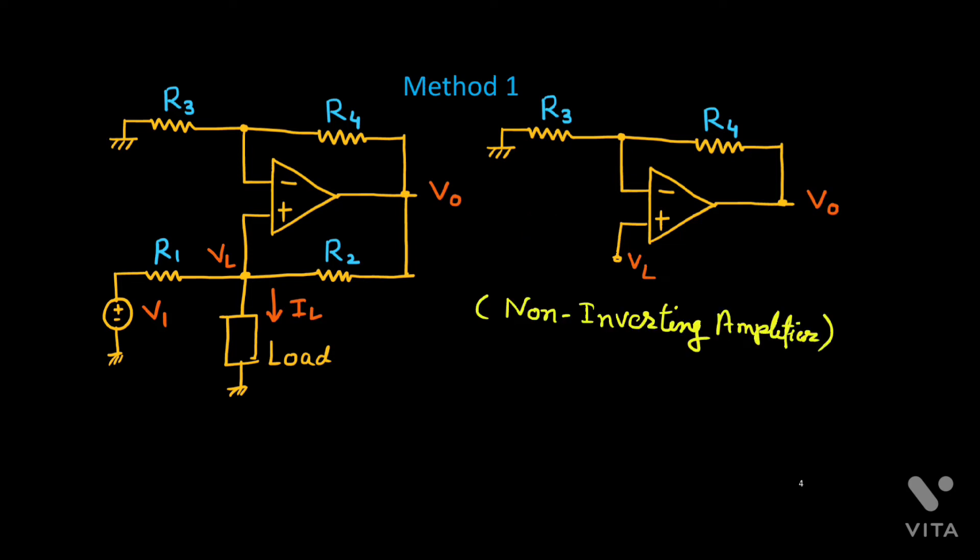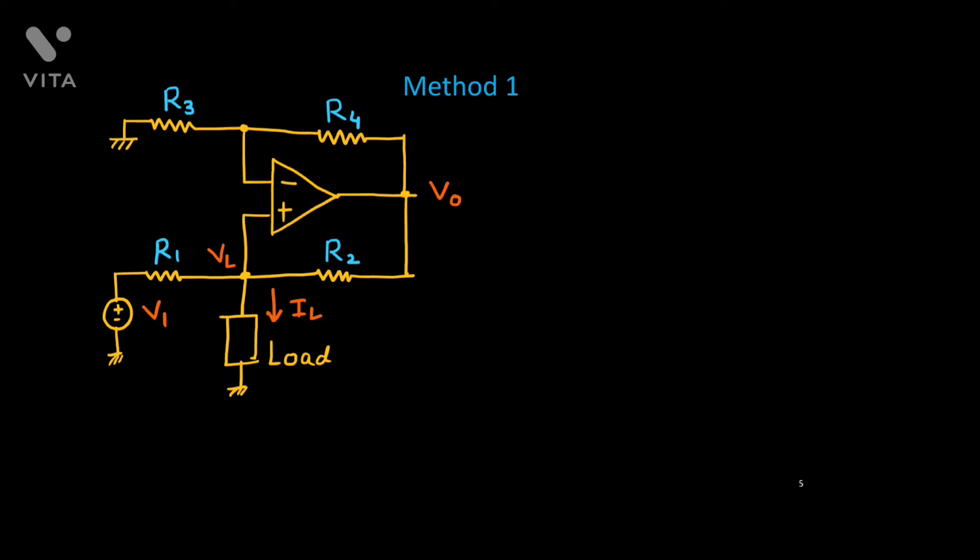We know that gain is 1 plus RF upon R1. In this case it is 1 plus R4 upon R3. Thus, the output voltage V0 is 1 plus R4 upon R3, this is the gain factor, multiplied by the non-inverting voltage which is VL. This V0 is depending on this node potential VL. So V0 equals 1 plus R4 by R3 times VL.